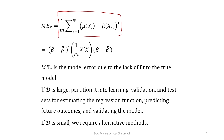If the data set D is large, we partition it into learning, validation, and test sets for estimating the regression function, predicting future outcomes, and validating the model. If D is large enough, there is no problem — you can easily partition it into three sets: learning set, validation set, and test set. But when D is small, we face a problem: if we further partition D, the learning set becomes very small and you would not get efficient estimators. Then we require some alternative methods.